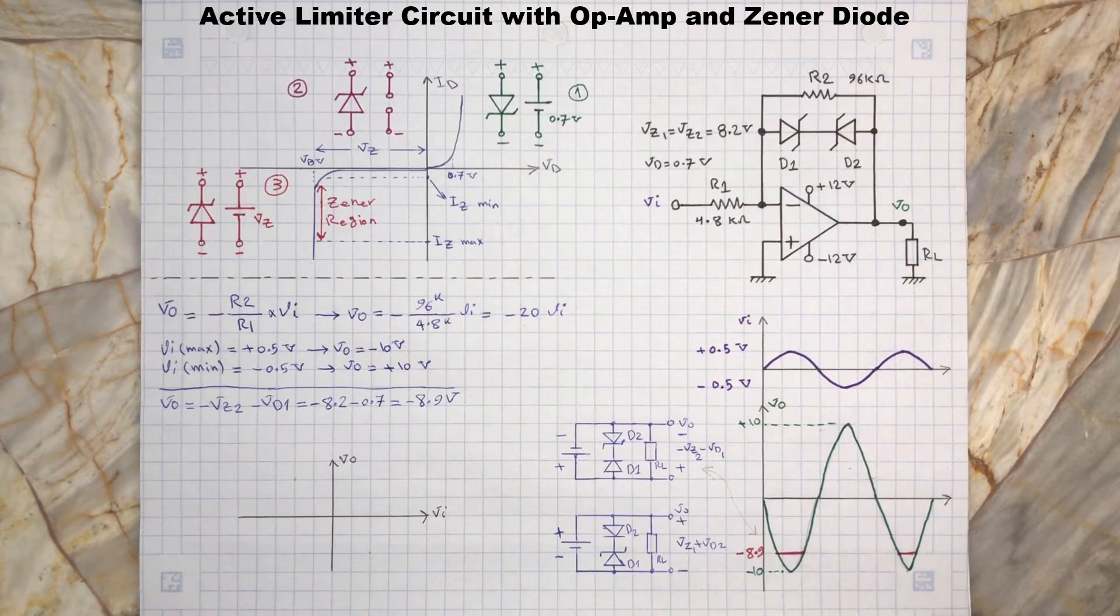With the same approach, when output voltage Vo gets to positive 8.9 volts, then diode D2 gets forward biased from the output terminal of the op-amp and it will act as a regular diode.